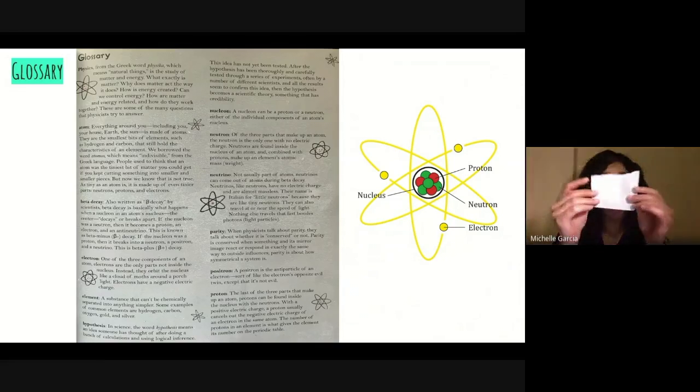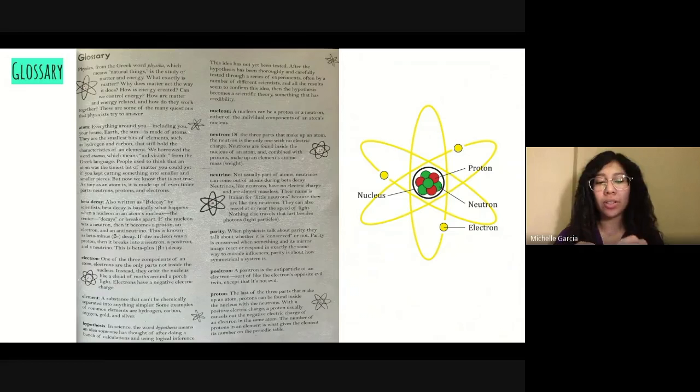Take this piece of paper, for example. Right now, I can rip it apart into smaller pieces, so it's divisible. But if I'm patient enough and keep ripping it apart, eventually the paper will reach a point where it cannot be broken apart into smaller pieces. It will become indivisible.